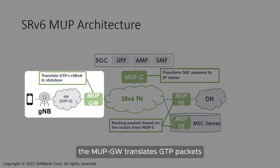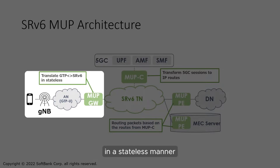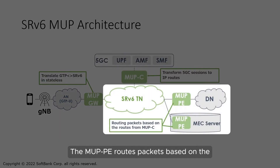The MUP gateway translates GTP packets to SRV6 packets and vice versa in a stateless manner. The MUP PE routes packets based on the IP routes received from the MUP controller.